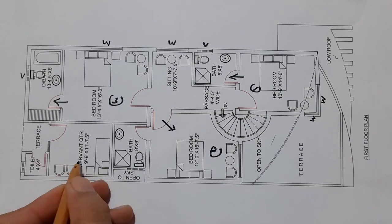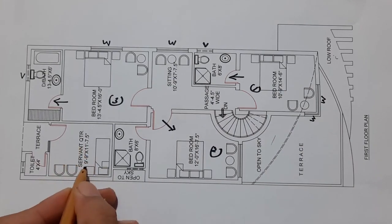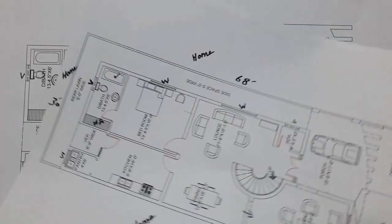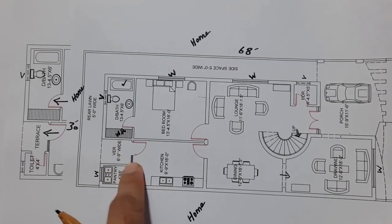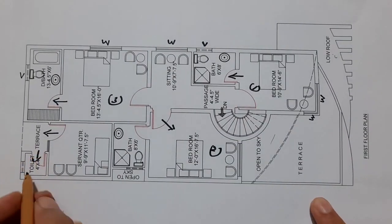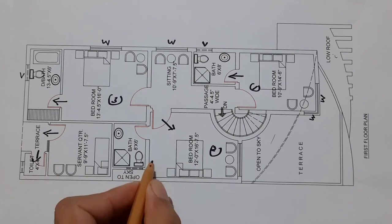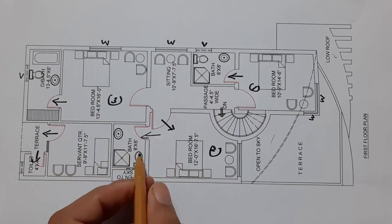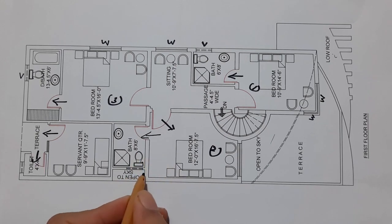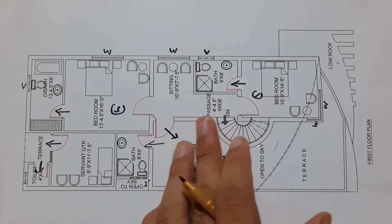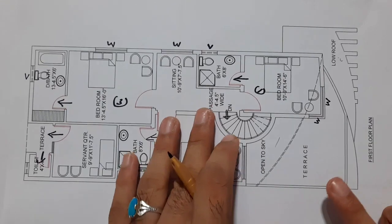There is a servant area or small toilet of 4 by 4 feet. There is also a terrace designed for the small veranda from the ground floor. An additional bath is 8 by 6 feet. There is an open-sky area with a width of 2 feet.